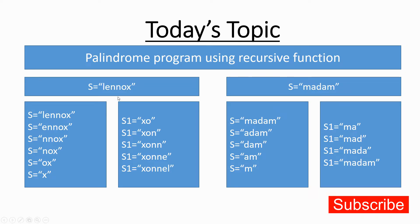Let's take the word 'lenox'. This word is not a palindrome. The logic we are going to apply is: we give a call to a palindrome function and pass the string 'lenox'. Then we check whether the length of the string is one. Since the length is not one, we give a call to the same function inside the palindrome again.